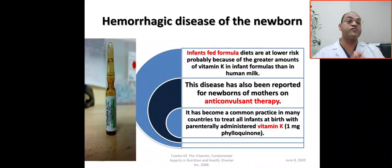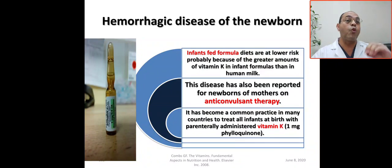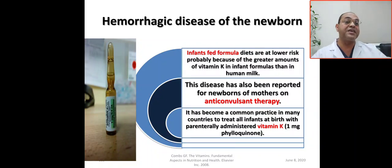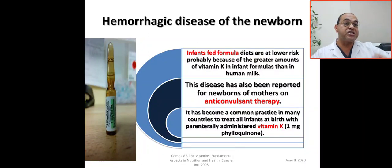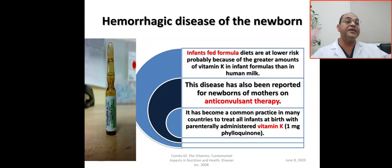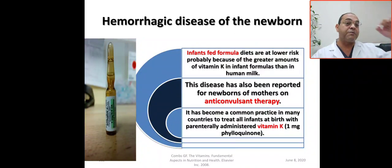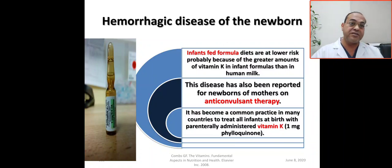Infants fed a formula diet are at lower risk of hemorrhagic disease, probably because of the greater amount of vitamin K in infant formula — 50 to 60 micrograms per liter — compared to 1 microgram per liter in human milk. The disease has also been reported in neonates of mothers on anti-convulsive, anti-TB, or anti-coagulant medications, which interfere with vitamin K metabolism.